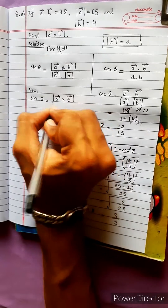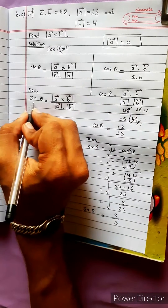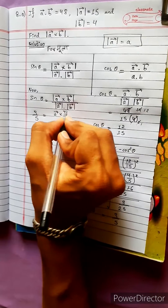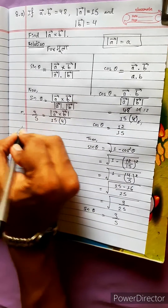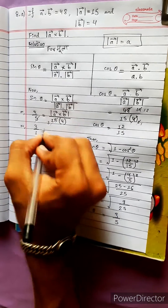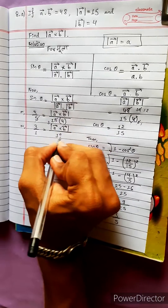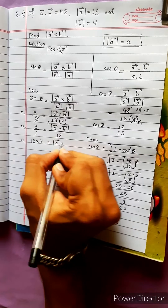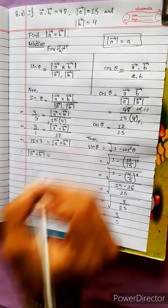The cross product magnitude equals |a| times |b| times sin theta. Sin theta is 3 by 5, and |a| times |b| equals 15 times 4, which is 12 divided by... so 12 into 3 equals the magnitude of a vector cross product d vector. Therefore a vector cross product d vector equals 36.